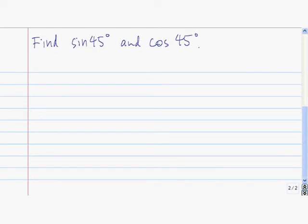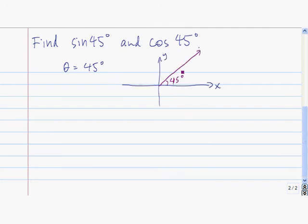Let's use that definition to find the sine of 45 degrees and the cosine of 45 degrees. All we need is a point on the terminal side of theta equals 45 degrees. Let's draw the angle theta equals 45 degrees. You probably notice that this ray lies on the line y equals x, so to find any point on the terminal side of 45 degrees, we need to plot any point on the line y equals x.